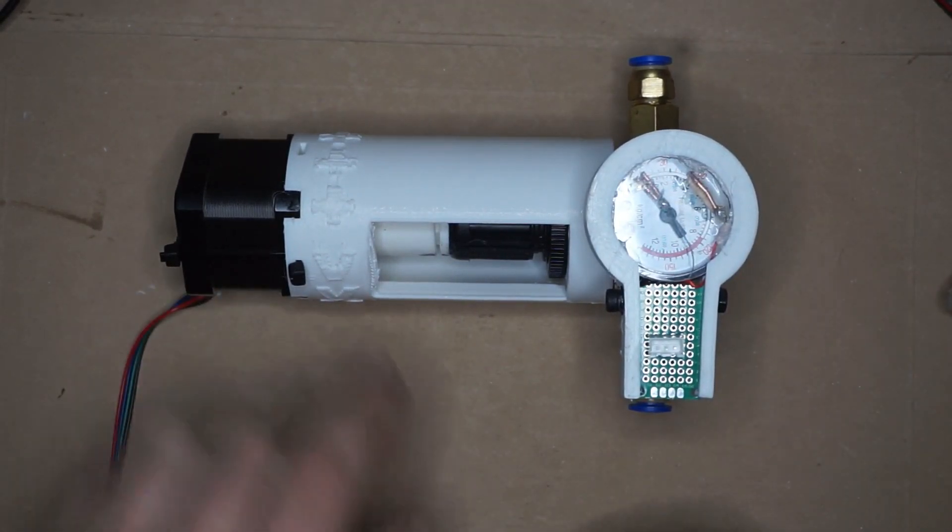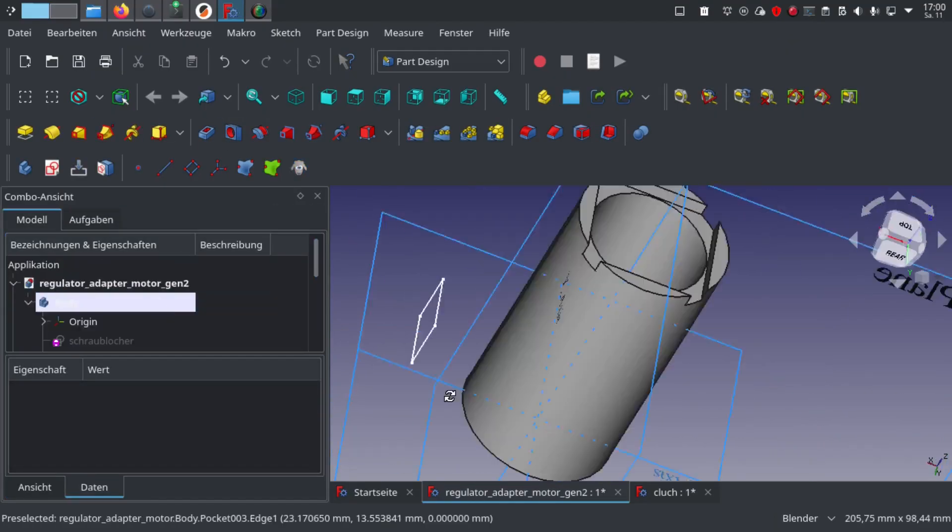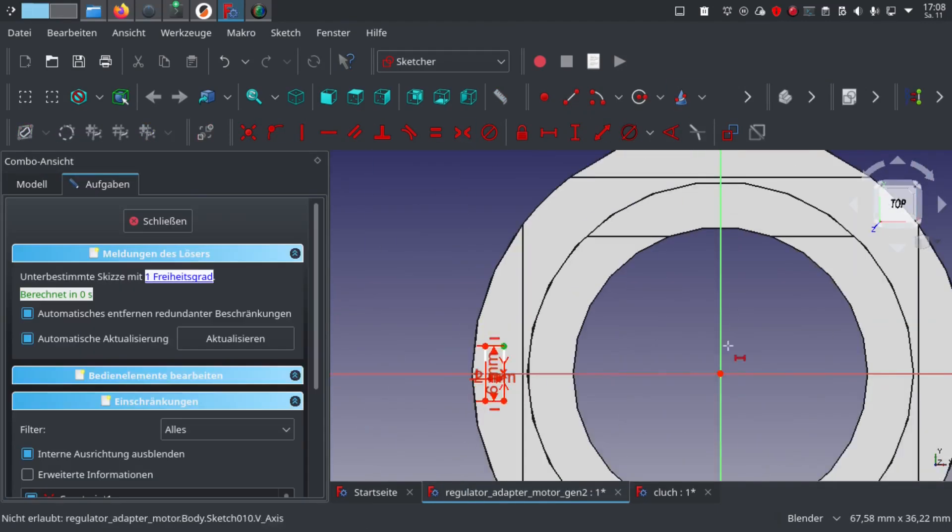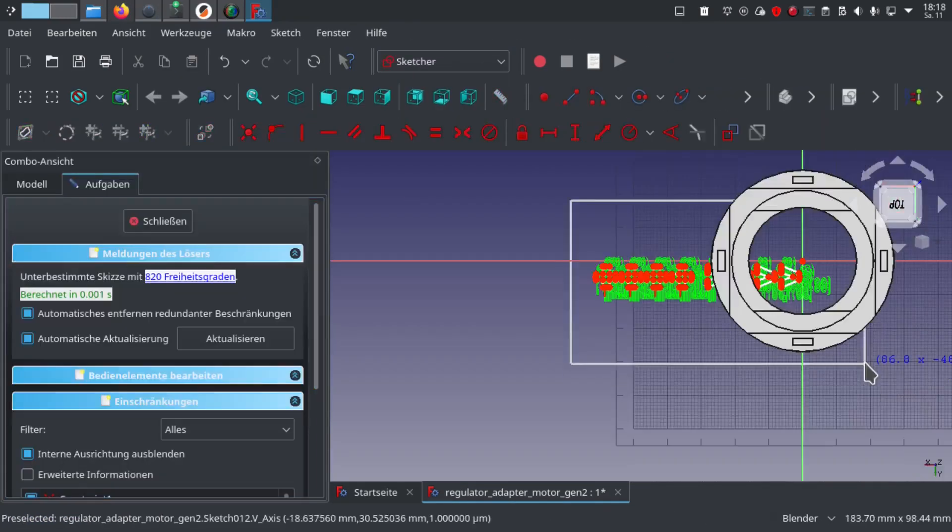To make this whole thing function, I had to design a connector between the motor and the pressure regulator. For this I used, as always, FreeCAD, and the files are available to download online. You can find the Thingiverse links in the description.